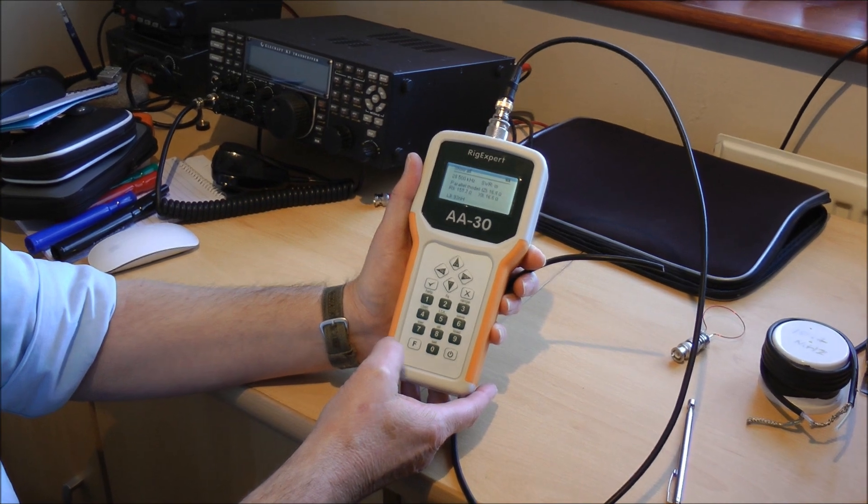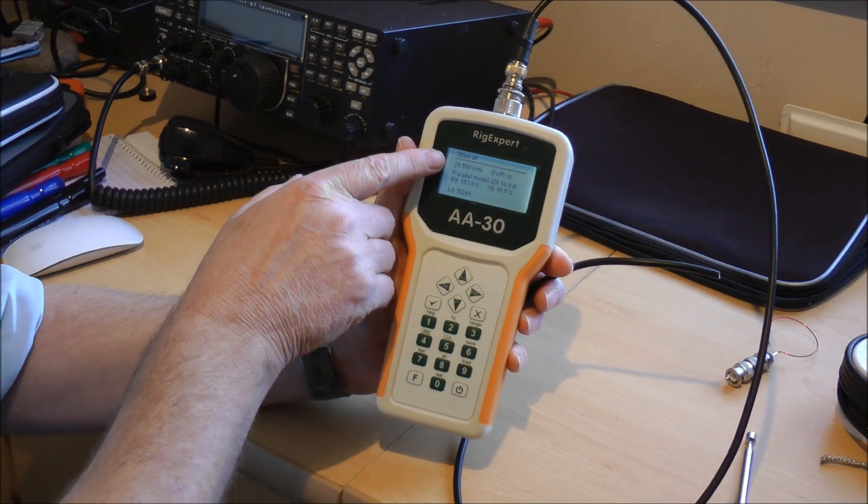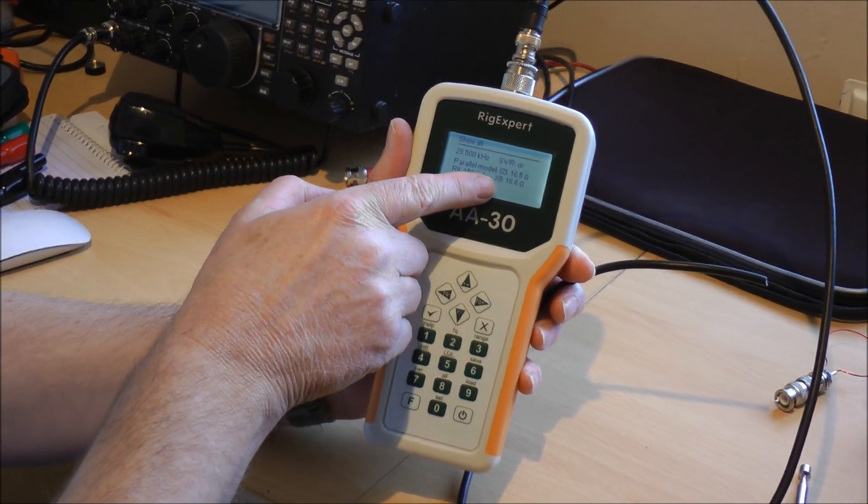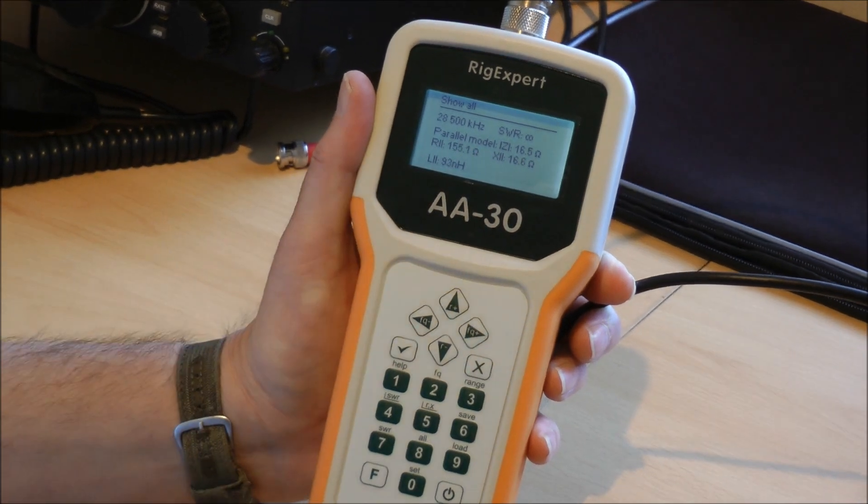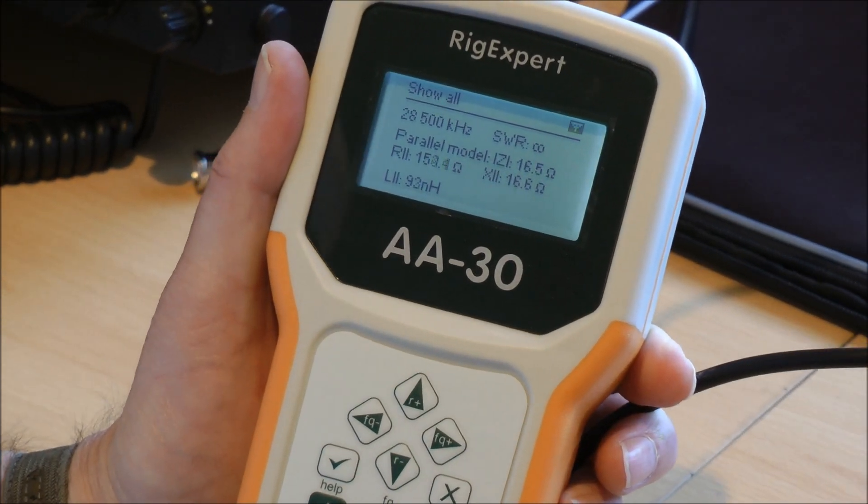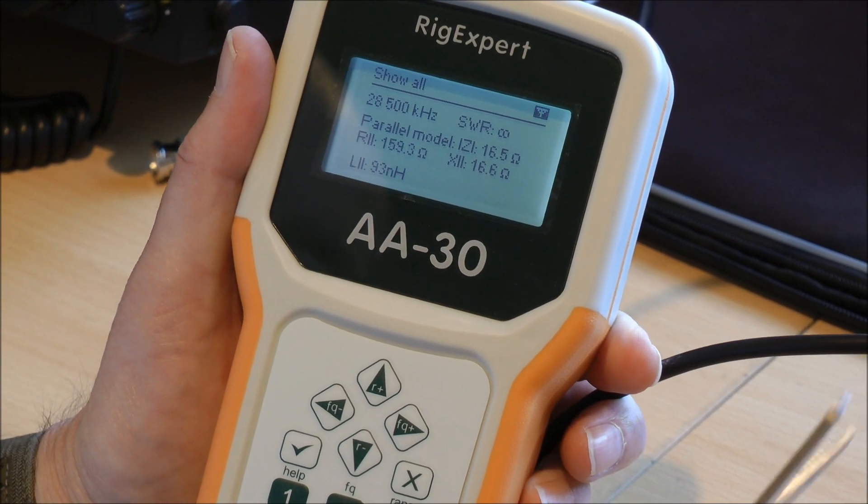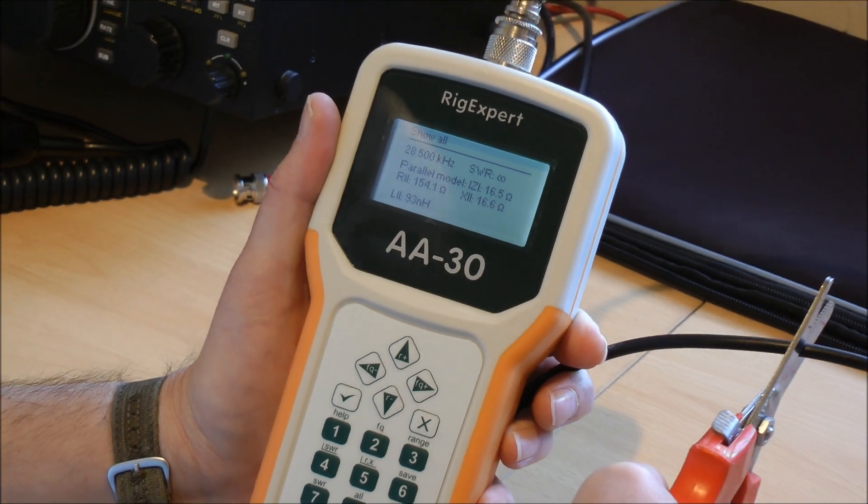And then go to the show all screen which is 8. You can see here what you're looking for is this X value to be 0 or fairly close to 0 to indicate resonance. So this is the end of the stub here. If I make some cuts with the scissors, you can see you don't have to re-hit the OK button, it'll do it live.